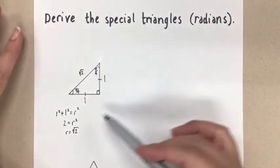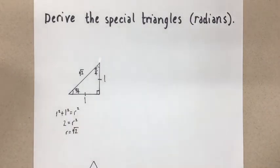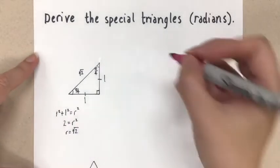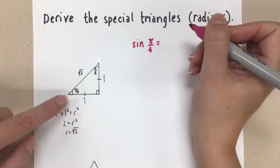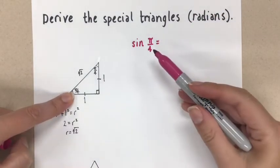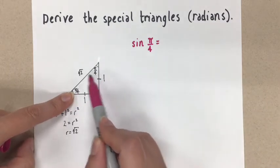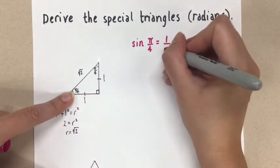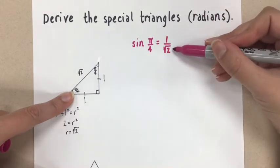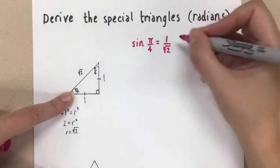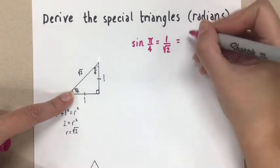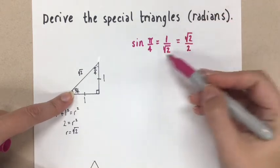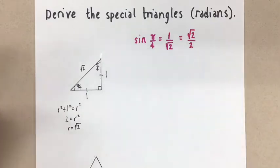Now we have the complete triangle, and we can go ahead and get all of our trig ratios from this triangle for the angle pi over 4. Let's start with sine. Sine of pi over 4 — we're going to use this angle here, pi over 4. The sine ratio is opposite over hypotenuse, which gives us 1 over root 2. Now we might want to rationalize that because sometimes we don't like radicals in the denominator. That means we would multiply this fraction by root 2 over root 2, which gives us root 2 over 2. Both answers are the same, and they are the exact value of sine of pi over 4.